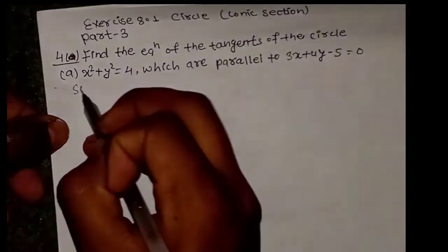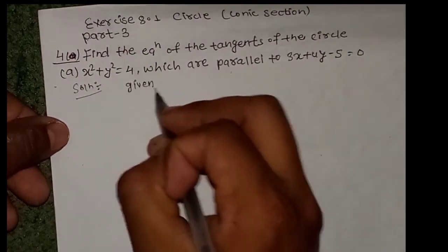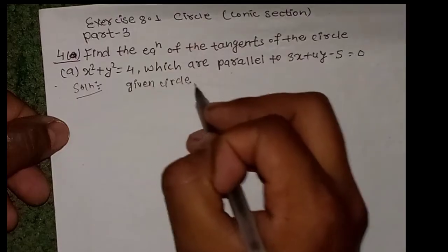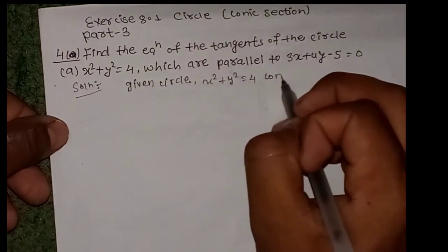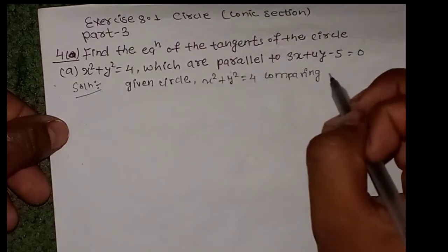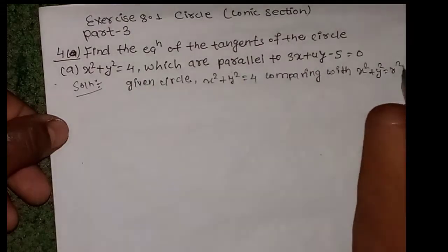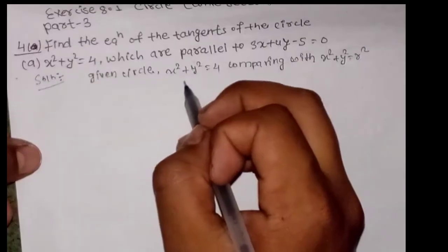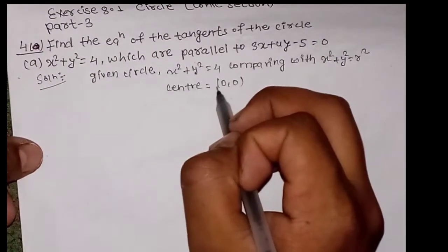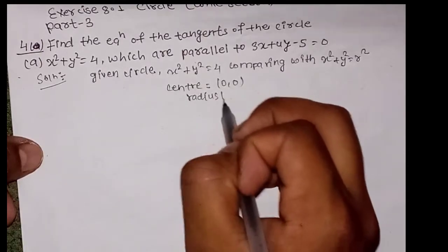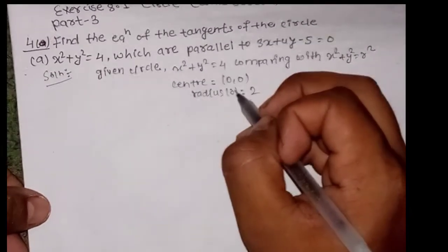First of all, the given circle is x² + y² = 4. Comparing with the standard form x² + y² = r², we get center (0, 0) and radius r = 2.